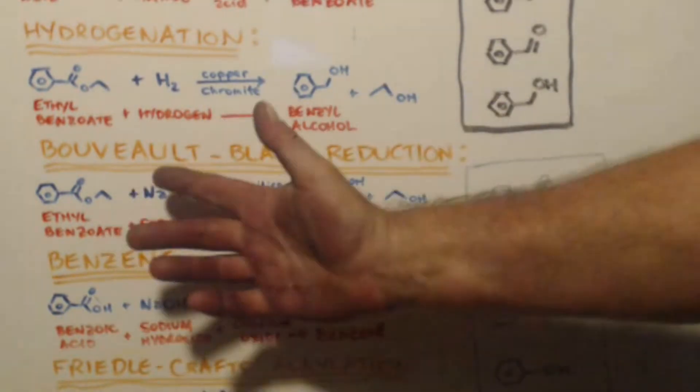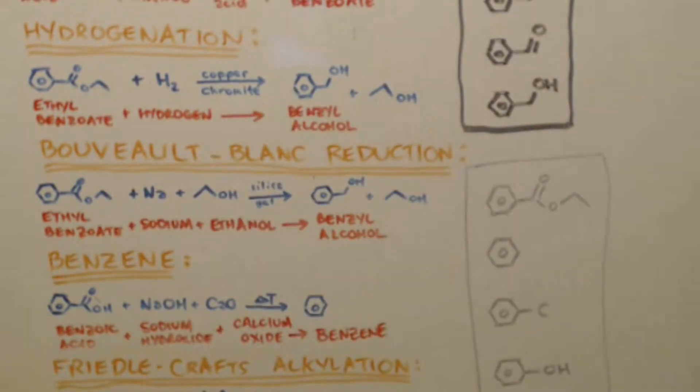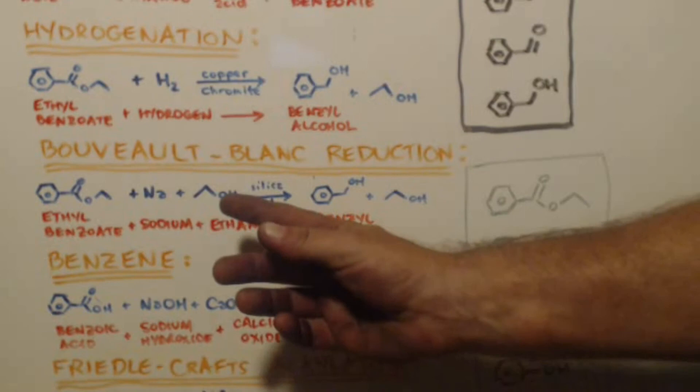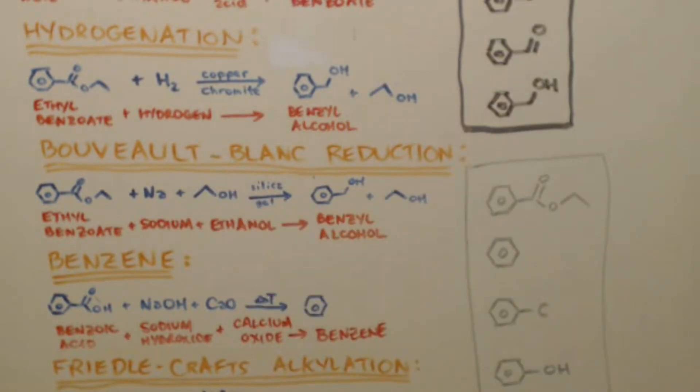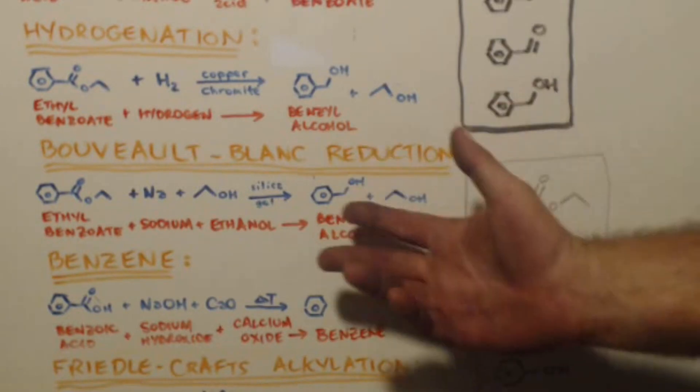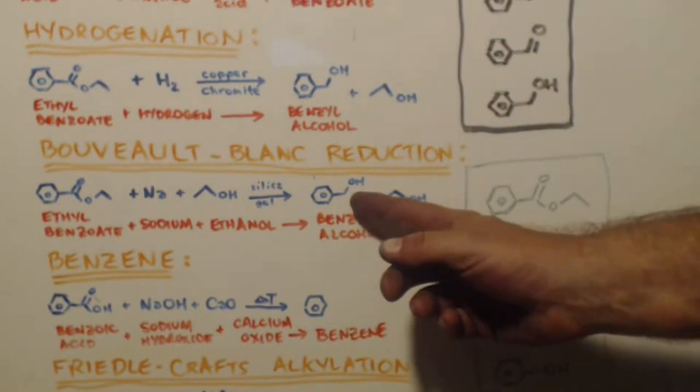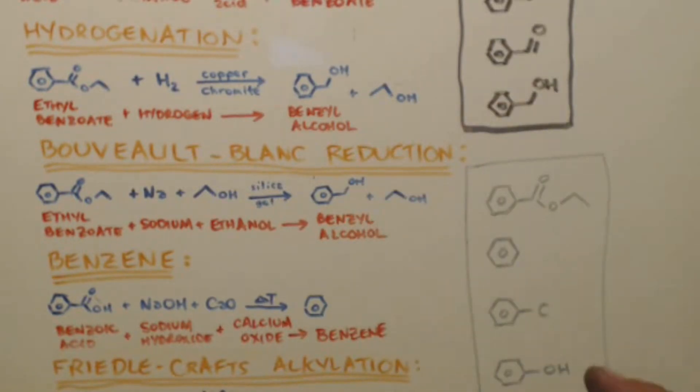Just to give you another example: Bouveault-Blanc reduction. Again, starting with an ester, ethyl benzoate. Sodium, ethanol. Mix them together. Drip in your alcohol, and you'll end up with benzyl alcohol and ethanol.